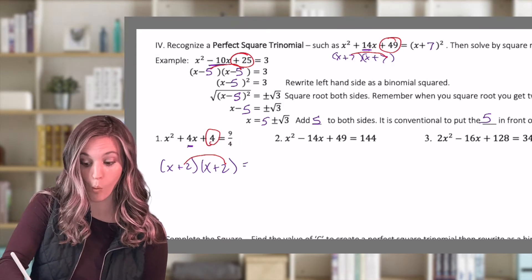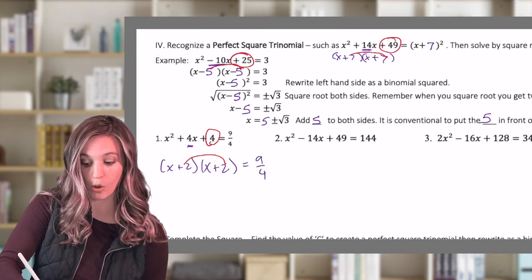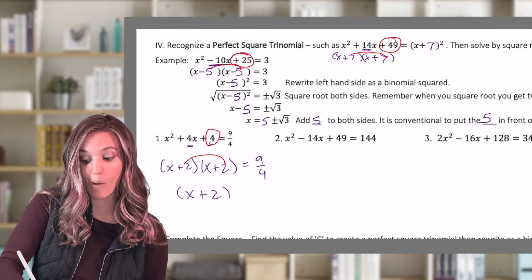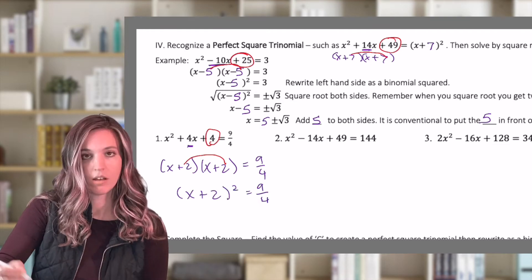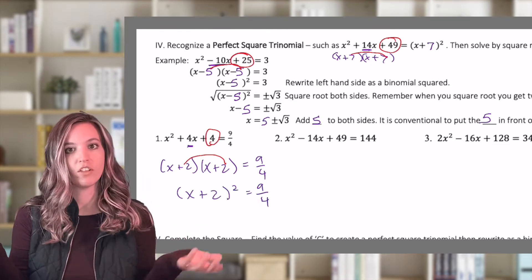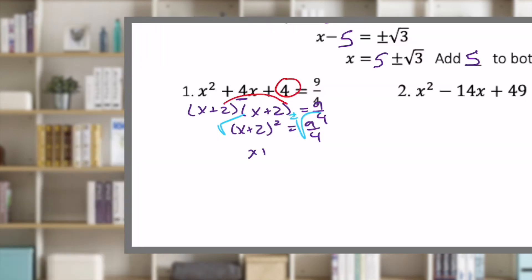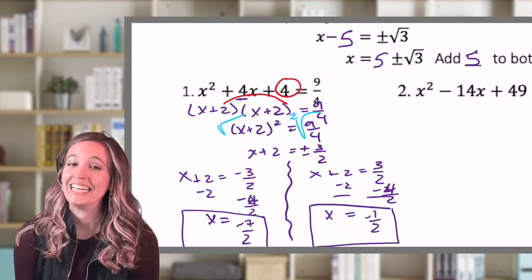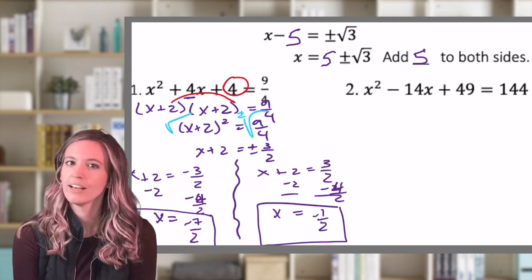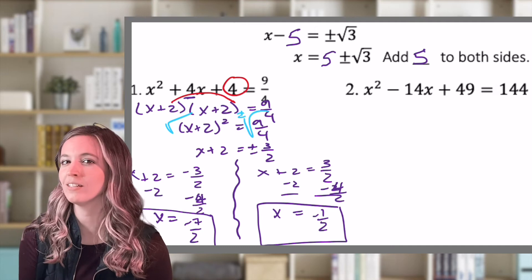Okay, so now I can rewrite that as one binomial squared. So x plus two squared equals 9 fourths. And from there, I'm set up to solve like last lesson. So I got negative seven halves and negative one half. Can you follow the steps and do this next one? Give it a try.